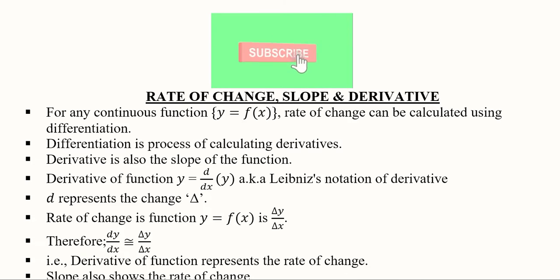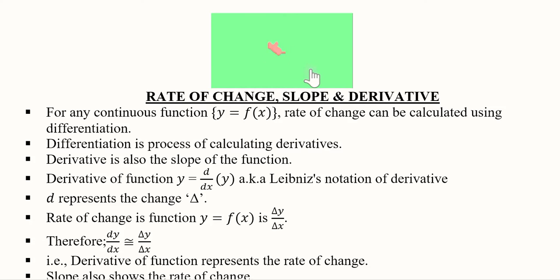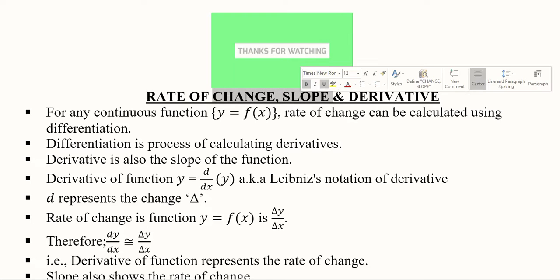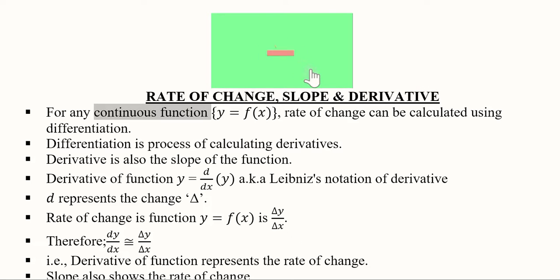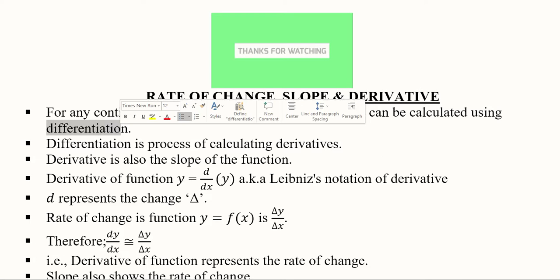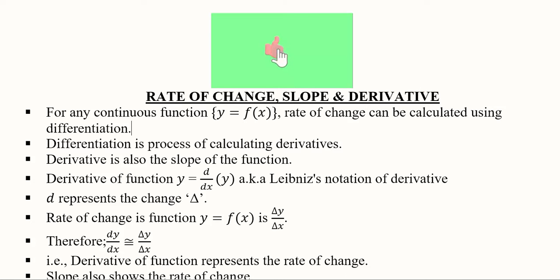In our last video we understood the concept of limited continuity and found that continuity in a function is a desirable situation that helps us take its derivative and find its economic implications. Now we'll try to understand the concept of derivative and its similar terms like rate of change and slope. For a continuous function, for example y = f(x), the rate of change can be calculated using differentiation, so rate of change is equivalent to the derivative of the function.